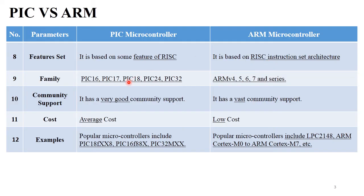The different families of PIC microcontroller are PIC 16, PIC 17, PIC 18, PIC 24, and PIC 32. ARM microcontroller families include ARM 4, 5, 6, 7, and other further series. We already discussed all the features of ARM microcontroller versions in last sessions.